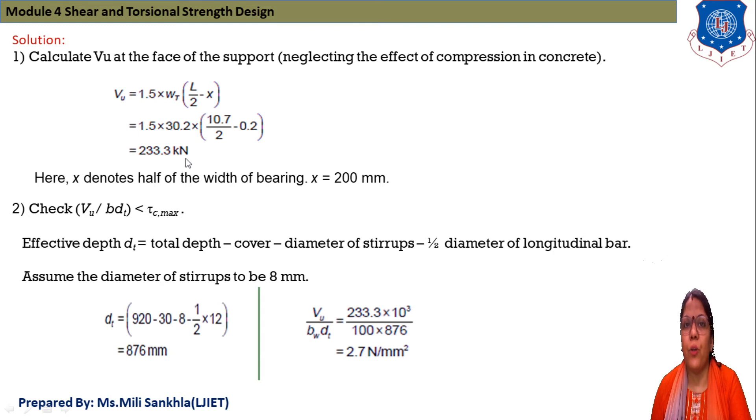First calculate Vu at face of support neglecting the effect of compression in concrete. Vu equals 1.5 × w × l/2 - x. 1.5 × load 30.2 and span 10.7 divided by 2, and x is the bearing. Total depth width is 400 mm so half is 0.2 and Vu we find 233.3 kN.